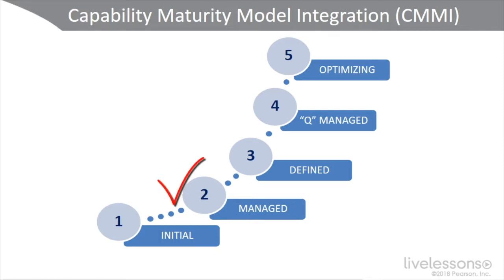Level two is the managed level. Here, our processes and controls are being projectized — we realize the gaps and the flawed nature of our initial implementation. We introduce management, risk management, and security management to generate programs and projects, though this is still going to be reactive. Level three is the defined level, where our processes and controls are proactive. Typically we're working off of standards like Sarbanes-Oxley, HIPAA, ITIL, and COBIT. We have a framework and infrastructure in place.